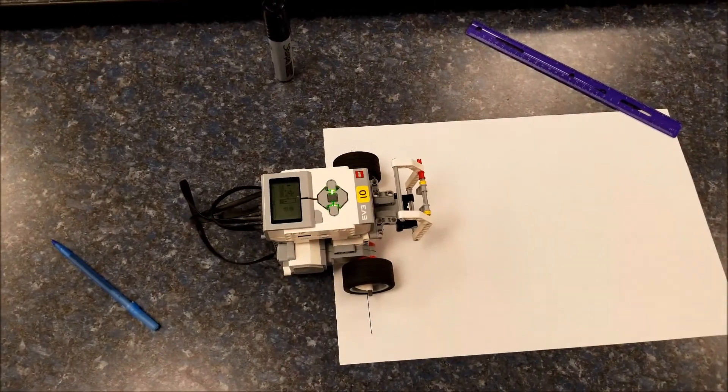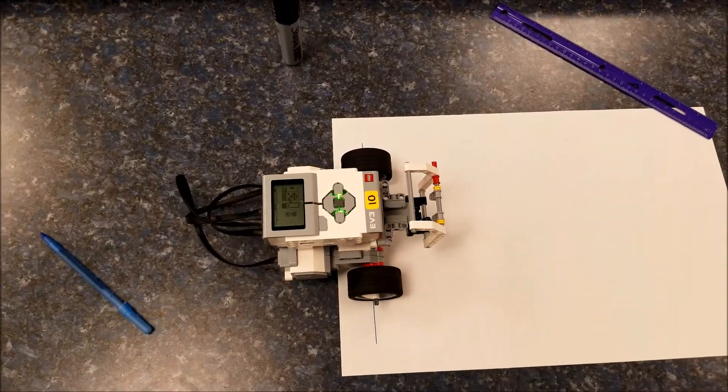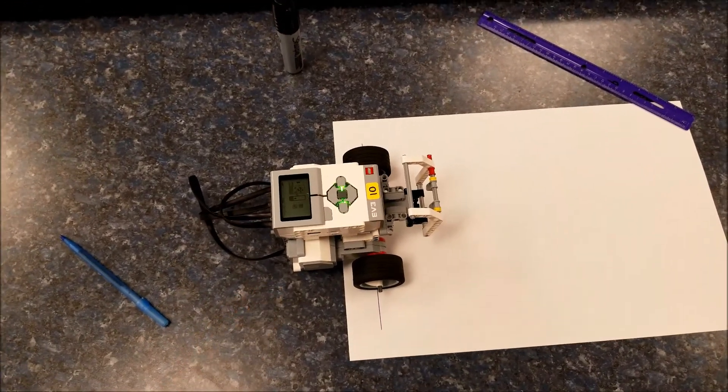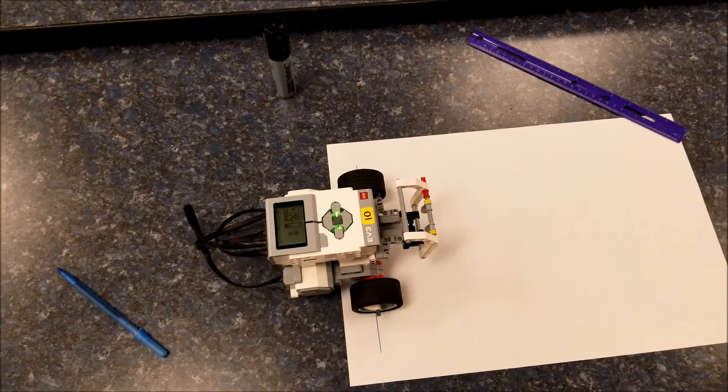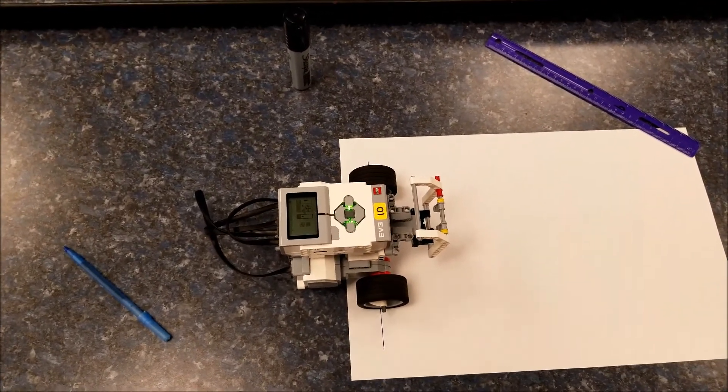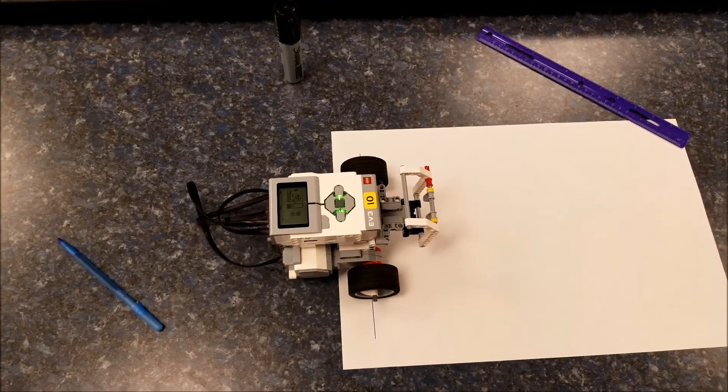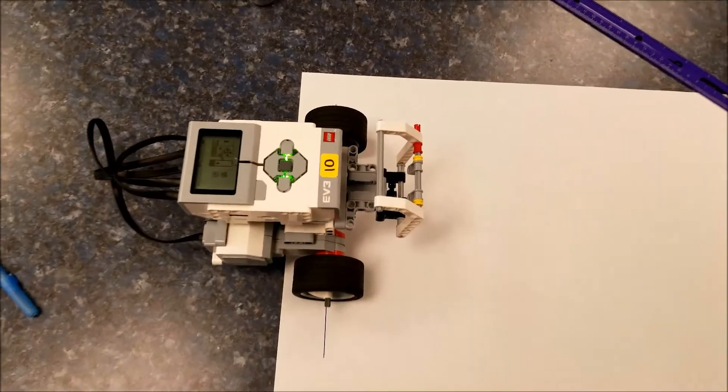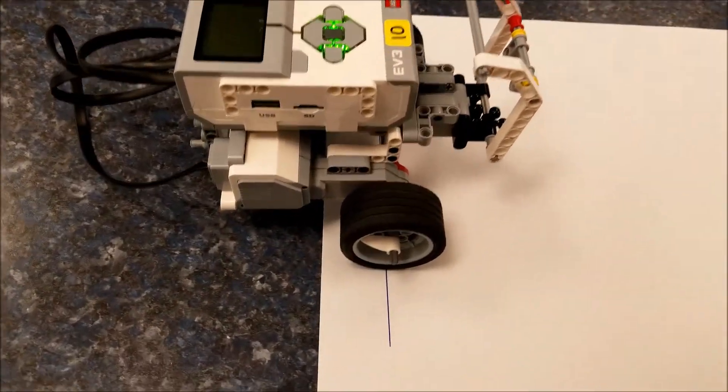So I know that in the Mindstorm software, we can bump this up to 100%. Right now on brick program, this would be at 70%. So basically, we're just trying to be able to convert today. How many miles per hour can our robot go? So here's what I have, and this is our experiment. Got a little starting line here.